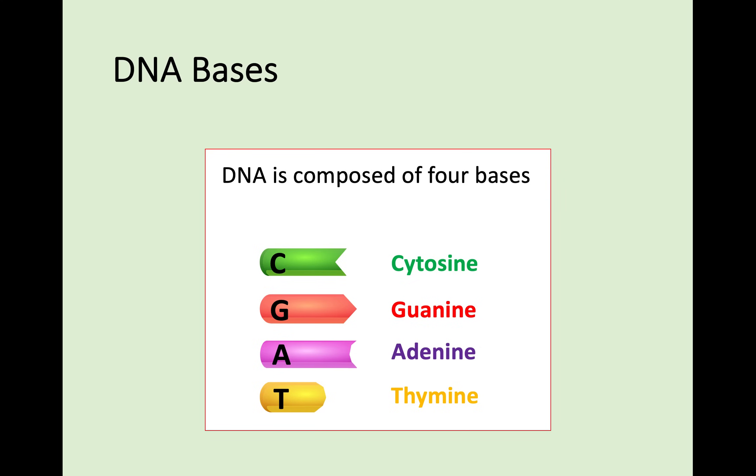Going back to DNA, DNA is composed of four different bases, and you need to know all of them: C, G, A, and T. But more specifically, cytosine, guanine, adenine, and thymine. We're going to look at how these work together, and how this makes up the structure of DNA.